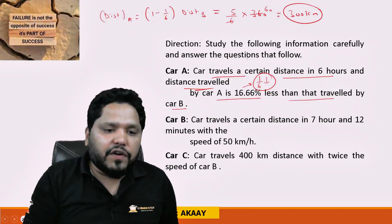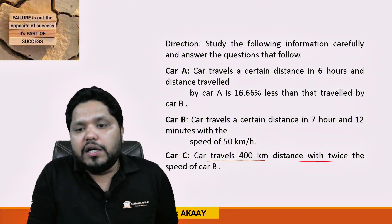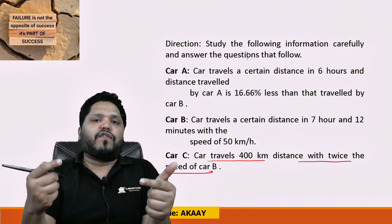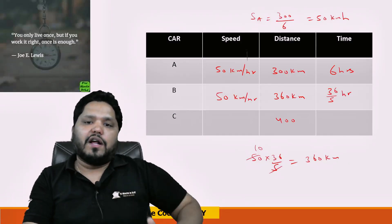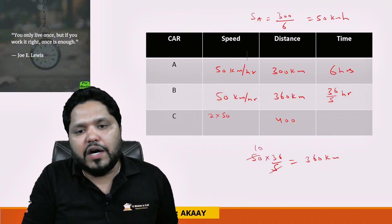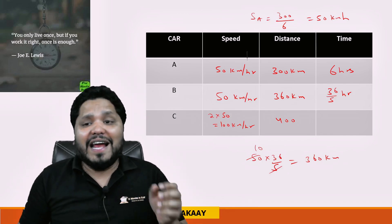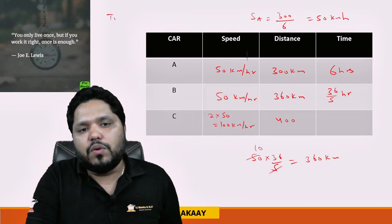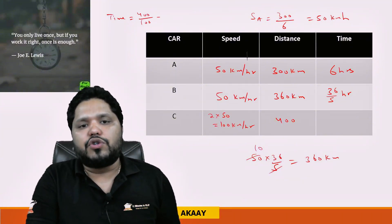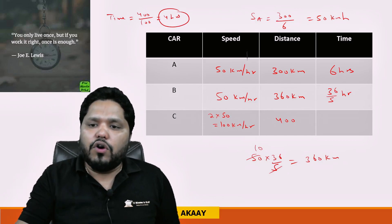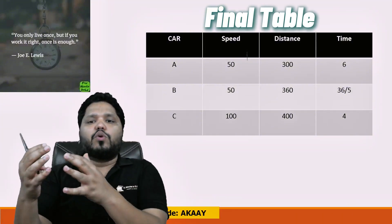The last car is Car C, which travels 400 km with twice the speed of Car B. Twice the speed of Car B means 2 × 50 = 100 km/h. Time taken by Car C = distance / speed = 400/100 = 4 hours. Now we have all the information for all three cars in the table.